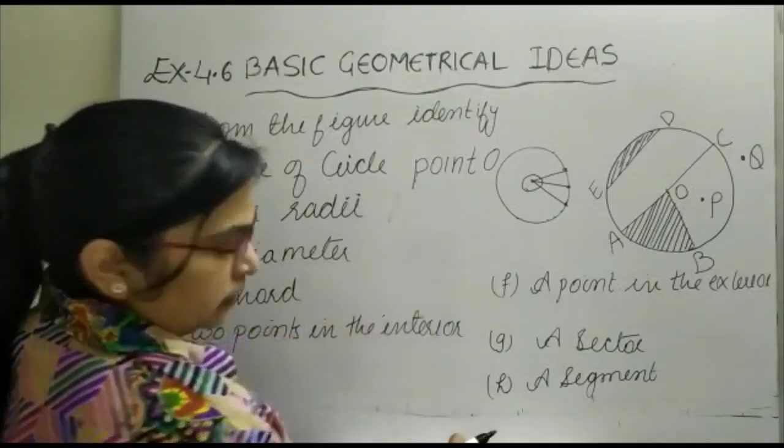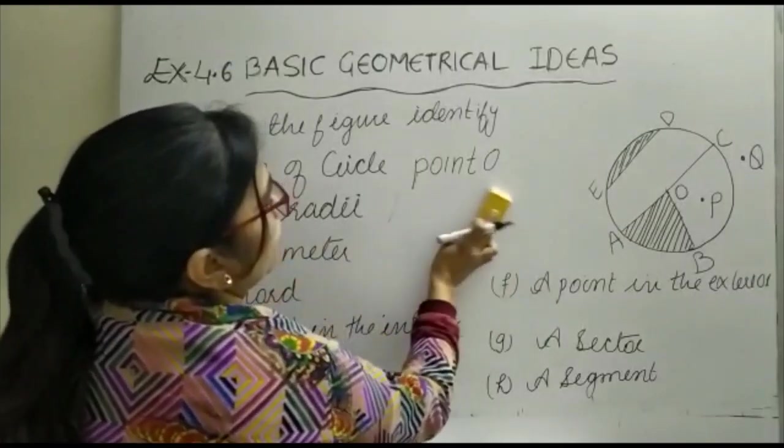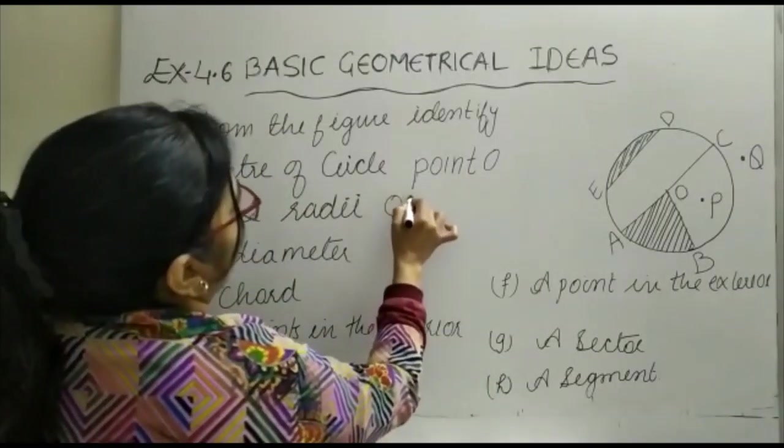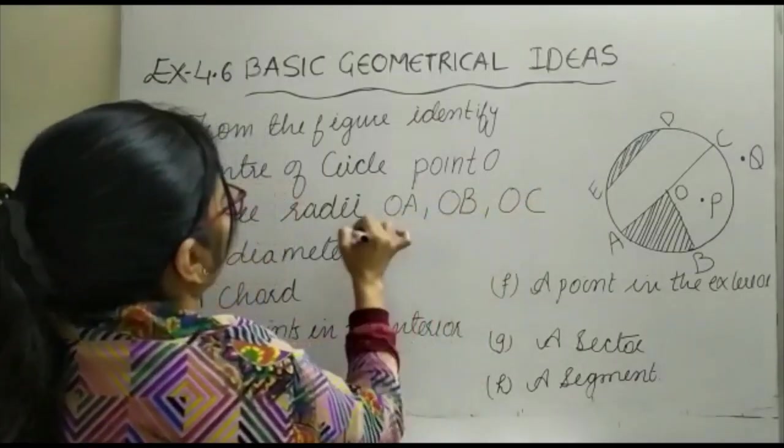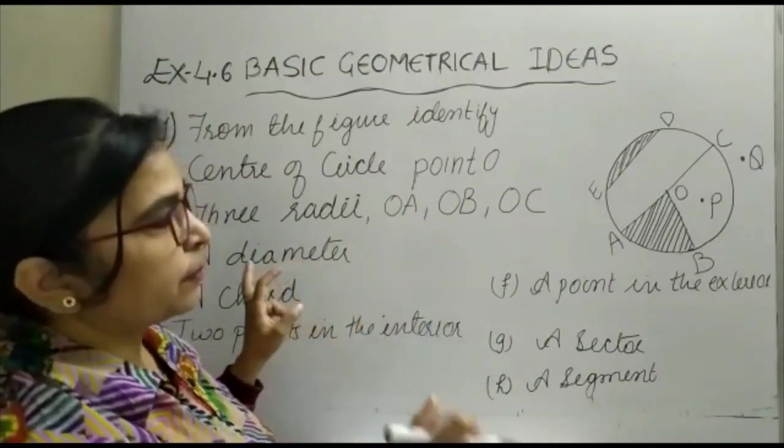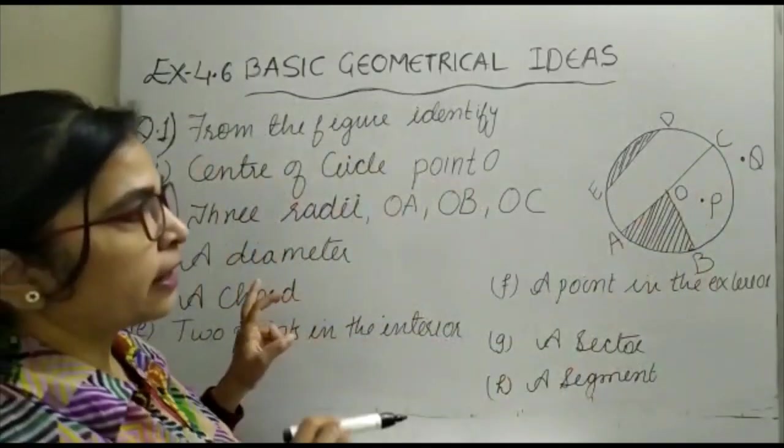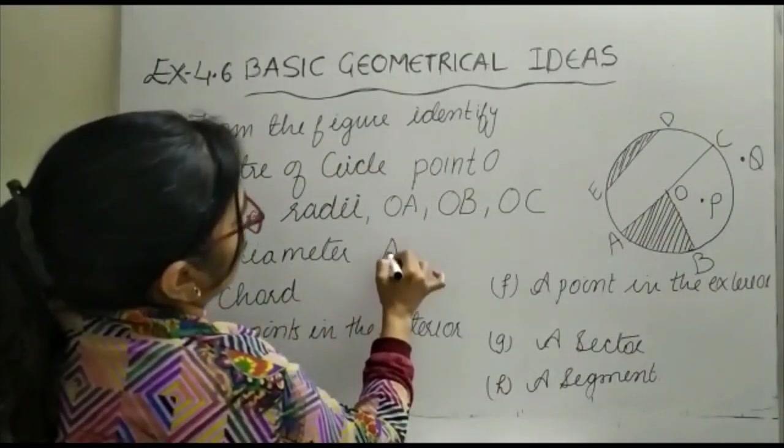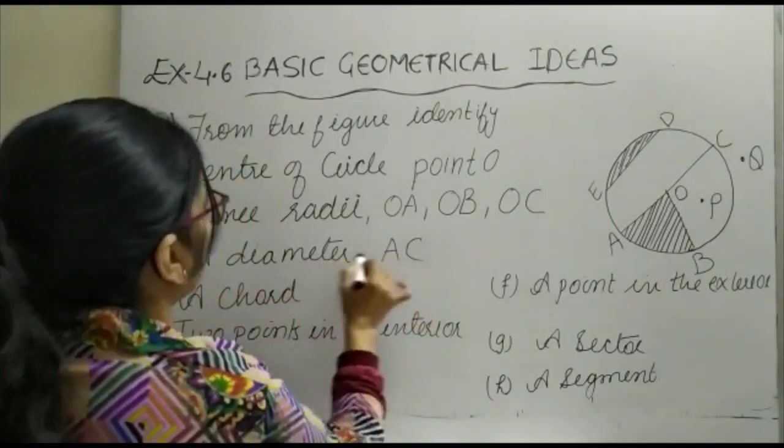You can start from O. We can write radius as OA, OB, and OC. Now, a diameter is the line segment which passes through the center of the circle. Here, the diameter is equal to AC.